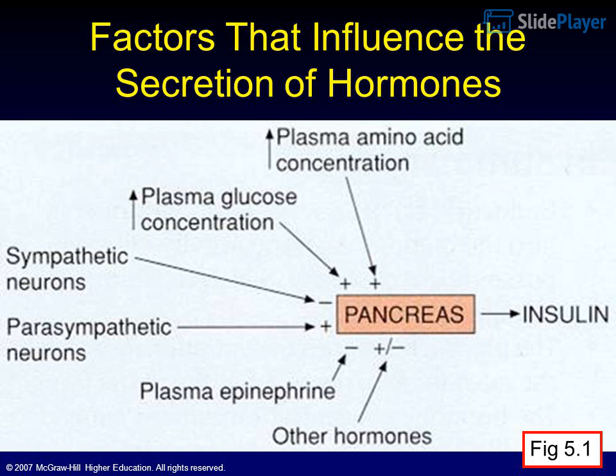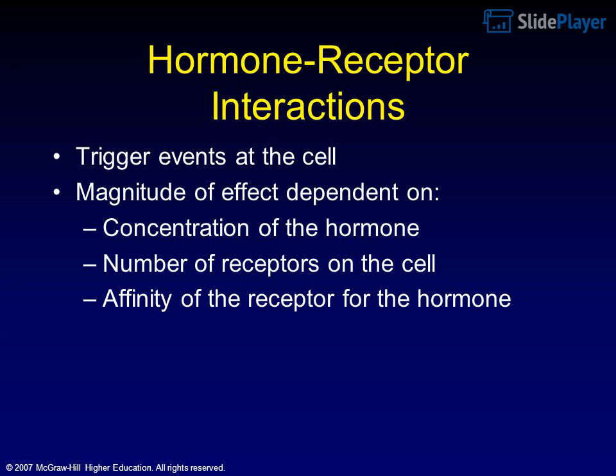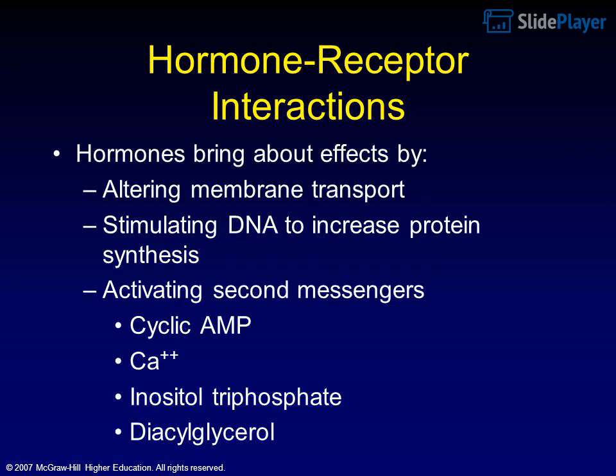Hormone-receptor interactions trigger events at the cell. The magnitude of effect is dependent on the concentration of the hormone, the number of receptors on the cell, and the affinity of the receptor for the hormone.